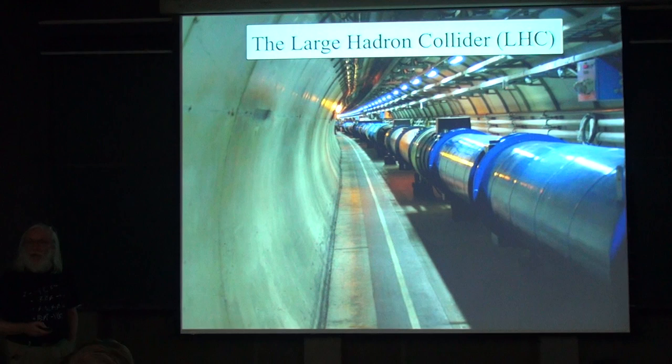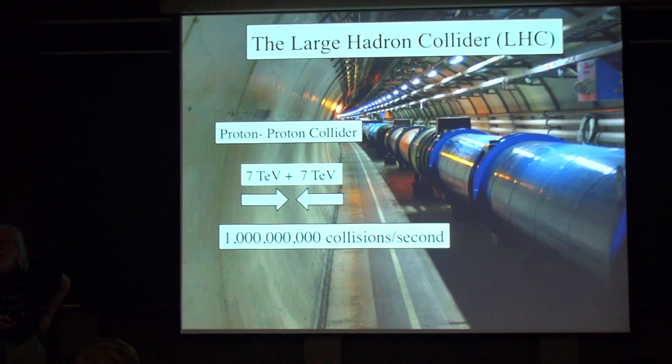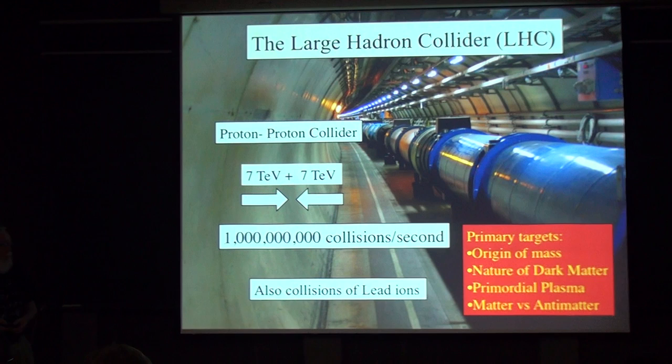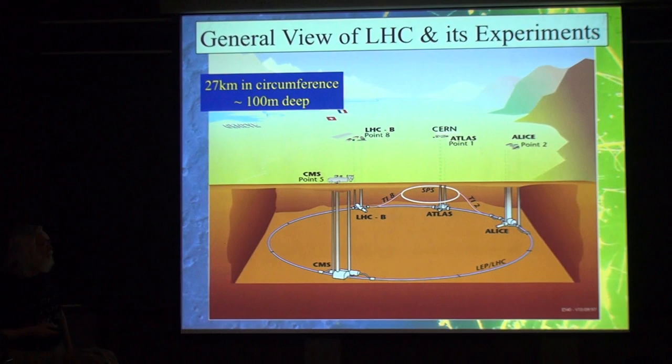Here is the LHC — a tunnel 27 kilometers in circumference, 100 meters underground. They bend protons around so they collide, with energy eventually up to 7 TeV each, making a million collisions per second, and also providing lead nuclei. In these experiments we aim to understand not only the origin of mass, but also the nature of dark matter, this matter-antimatter difference, and the nature of the plasma that filled the universe when it was a fraction of a second old.